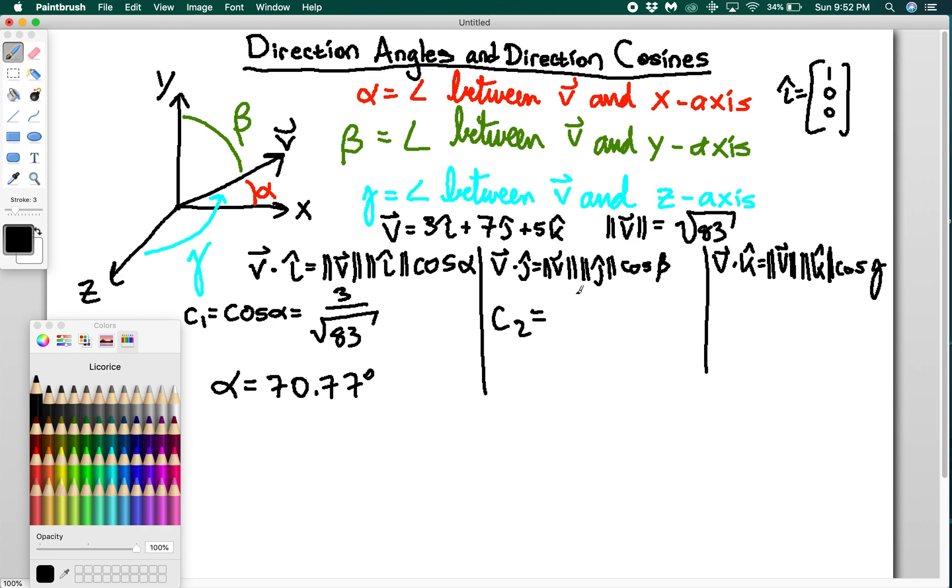So c2, the direction cosine for beta, is 7 over root 83, and c3 is equal to 5 over root 83. Beta is 39.79 degrees, and gamma is equal to 56.71 degrees. So these are your direction angles.